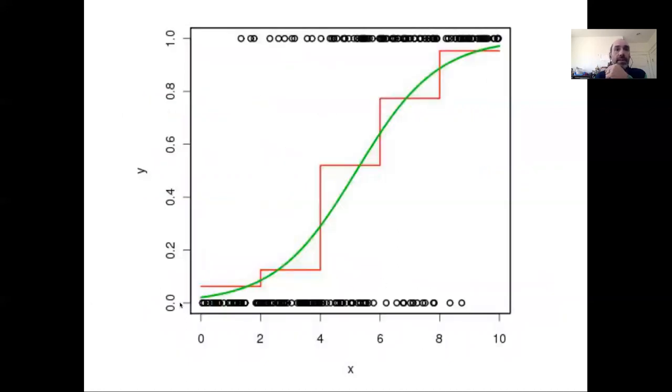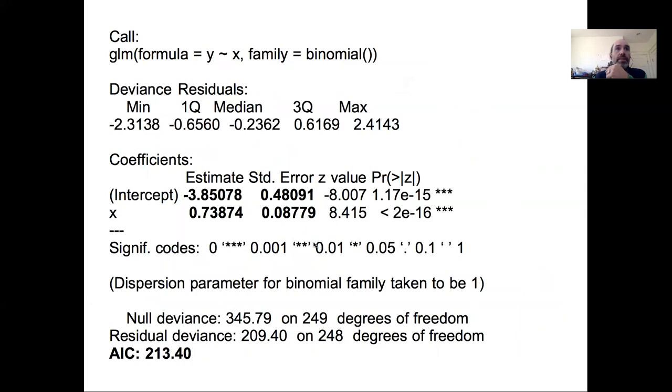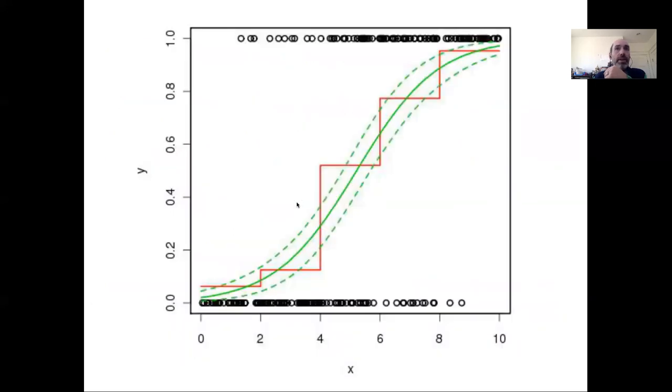This shows the best fit model compared to our empirical bin estimates. The results from that GLM function include the AIC, the parameter estimates and errors, and our ability to put a confidence interval around this logistic model. We often don't put predictive intervals around logistic models because the predictions only take on values of zero and one, so the lower confidence interval would stay at zero unless there were very few zeros, and the upper confidence interval would stay at one unless there were very few ones.